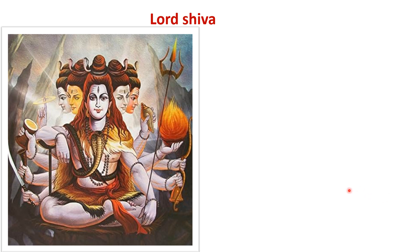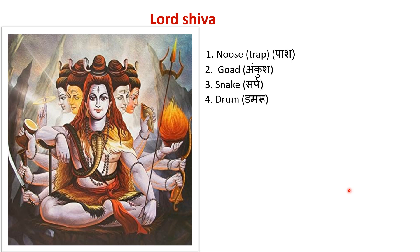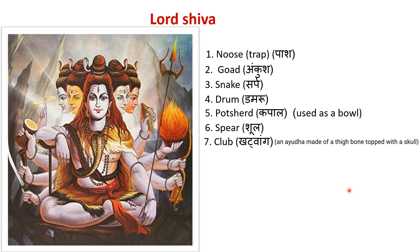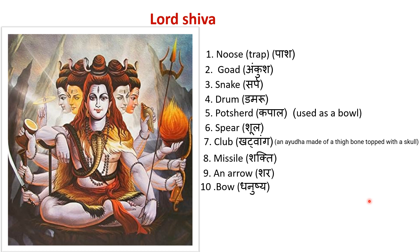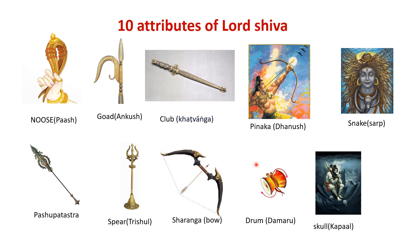The attributes of Lord Shiva are: Pasha (noose/cord), Ankusha (goad, made of elephant's tusk), Sarpa (snake), Damaru (drum), Kapala (skull used as a bowl), Shula (spear), Katvanga (club made of a thigh bone topped with a skull), Shakti (missile), Shara (arrow), and Dhanush (bow). These are the 10 attributes of Lord Shiva.